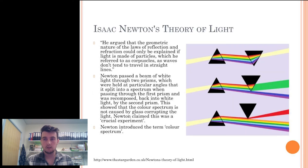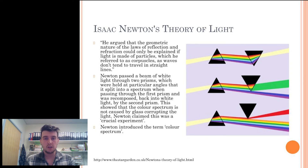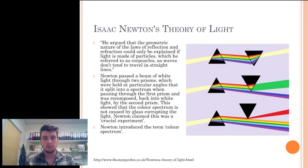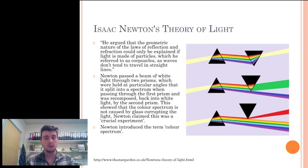Sir Isaac Newton argued that the geometric nature of the laws of reflection and refraction can only be explained if light is made of particles, as waves don't tend to travel in straight lines. Newton then passed a beam of white light through two prisms held at particular angles, which split into a spectrum through the first prism and was recomposed back into white light by the second prism. This showed that the colour spectrum is not caused by glass corrupting the light. Newton claimed this was a crucial experiment and also introduced the term colour spectrum.